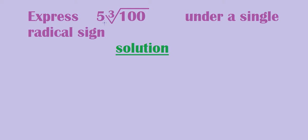Express 5 times the cube root of 100 under a single radical sign. This 5 is outside the cube root sign because it was once inside and then got out of the cube root sign.